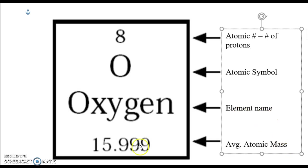The bottom number is the average atomic mass. Now, 15.999 — you might say, where's that coming from? The atomic mass is basically how massive that atom is. If you remember from the other video, a proton and a neutron are about the same size and make up the nucleus. Electrons are so small we don't even count them — it would take about 1,800 electrons to equal one proton. So even though electrons have mass, we consider it negligible.